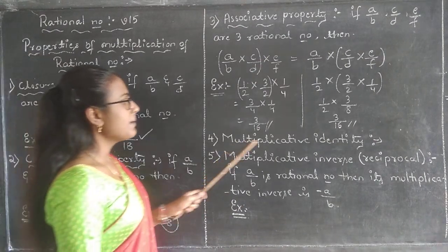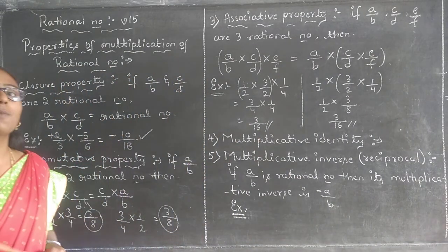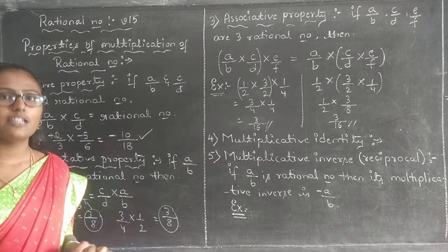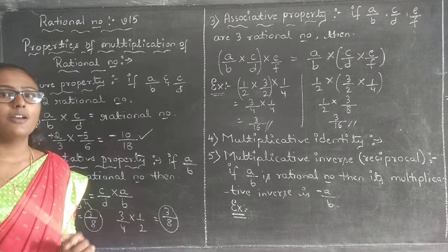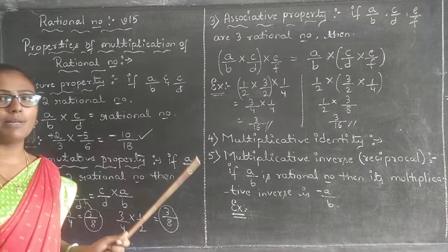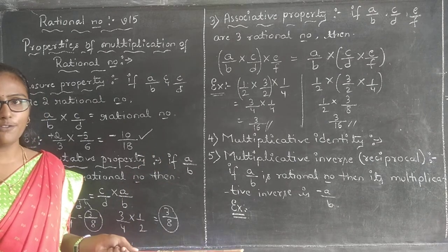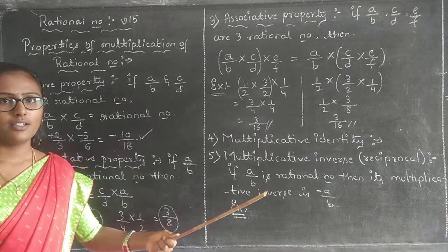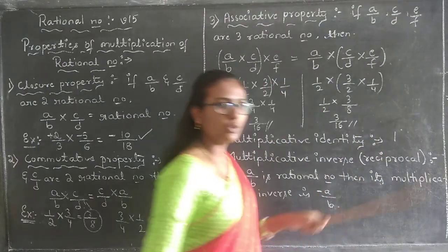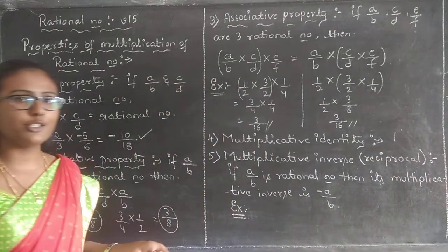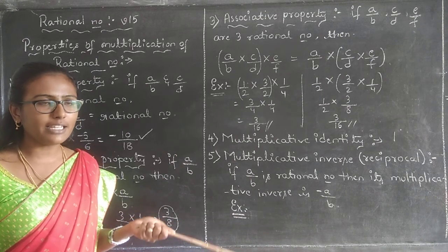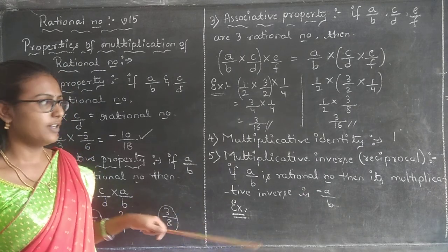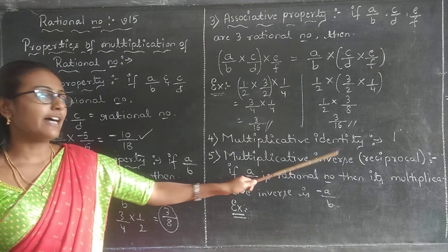The fourth property is multiplicative identity. In addition I told you about additive identity — which number is additive identity? Zero. Because when 0 is added to any number, the result is that number itself. Similarly, while multiplying, which number gives the result as the same number? It is 1. For example: 1×2 = 2, 1×3 = 3, 1×5 = 5, 1×(2/3) = 2/3. So when 1 is multiplied with any number, it gives that number itself. Therefore we call 1 as multiplicative identity.